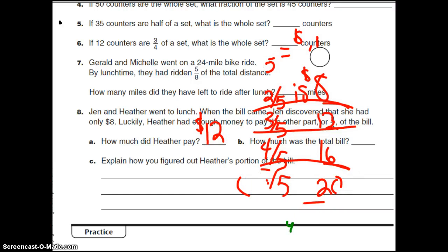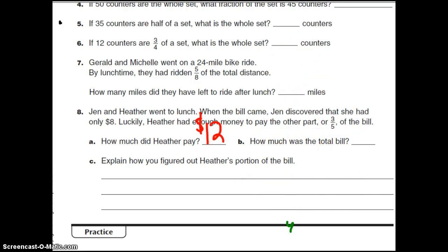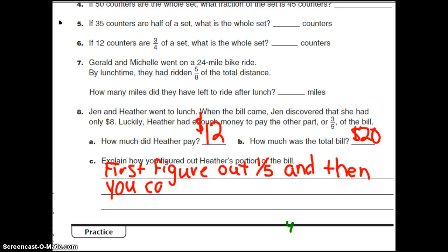I need to do a little erasing here. The whole bill was $20. And then it says, explain how we figured it out. First we figured out what 1/5 was. And after we did that, then we could find out, then figure out 1/5, and then figure out 3/5, and 5/5.